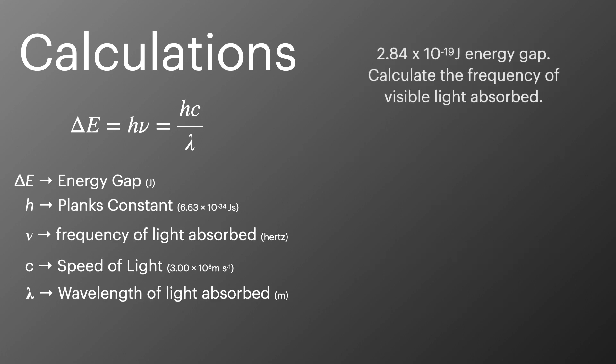If we take a look at another example then, where a 2.84 times 10 to the minus 19 joules energy gap, and we're asked to calculate the frequency of the visible light absorbed, the first thing we should do is write out the rearranged equation. Once we've got that, we're going to substitute in the numbers, that's a number from the question and Planck's constant. And then we're going to calculate the frequency to be 4.28 times 10 to the 14 hertz.